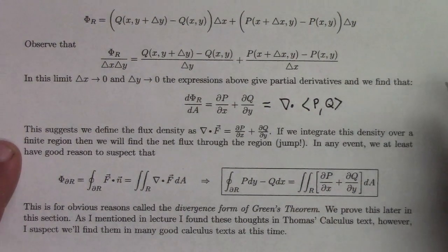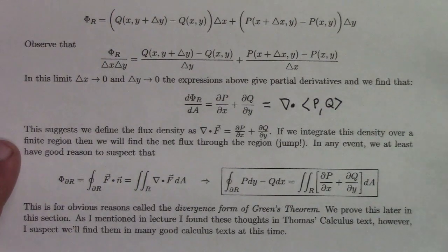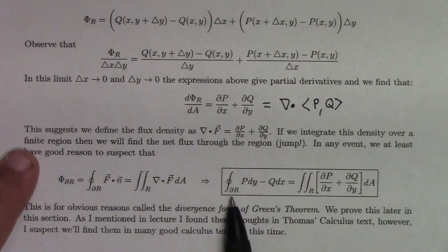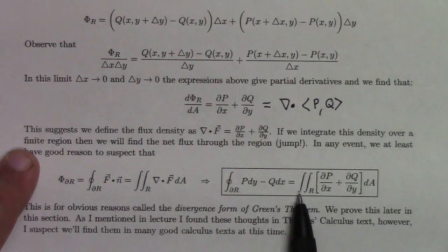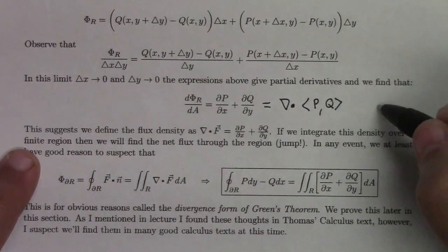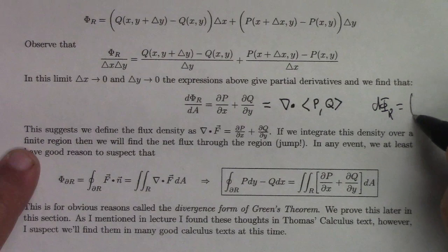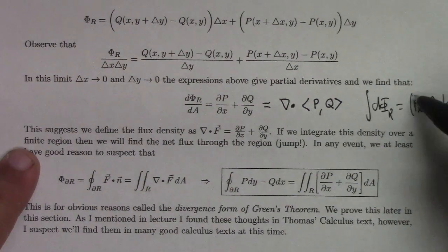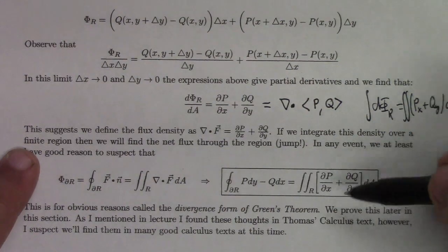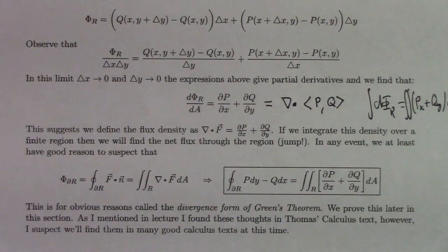So the infinitesimal flux for a tiny rectangle divided by its tiny area is the divergence: ∂p/∂x + ∂q/∂y. Integrating this, it stands to reason that the flux integral around the boundary of a closed region R should equal the double integral of the divergence over R. There's a logical jump there, but that's the intuition.